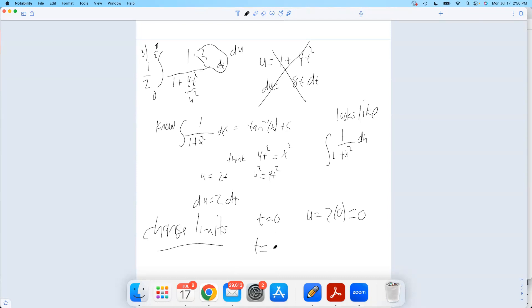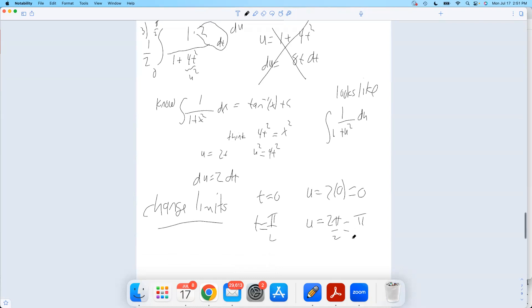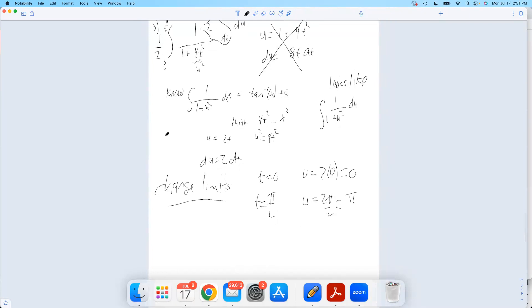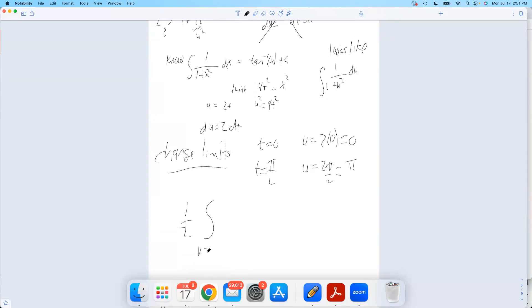And when t equals pi over 2, u then will be twice that, which will be pi. All right, then that one half is going to come along for the ride. I'm going to have from u equals 0 to u equals pi. 1 over 1 plus u squared du, which will be one half the arctan of u evaluated from u equals 0 to u equals pi.